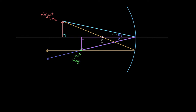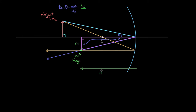These triangles are similar — they both have an angle theta and a right angle. Using tangent: tangent of theta equals opposite over adjacent. For the theta in the lower triangle, the opposite side is the height of the image, HI, and the adjacent side is how far the image is from the mirror — we call that the image distance, DI, measured from the center of the mirror. For the theta in the upper triangle, the opposite is the object height HO, and the adjacent is the object distance DO, also measured from the center of the mirror.